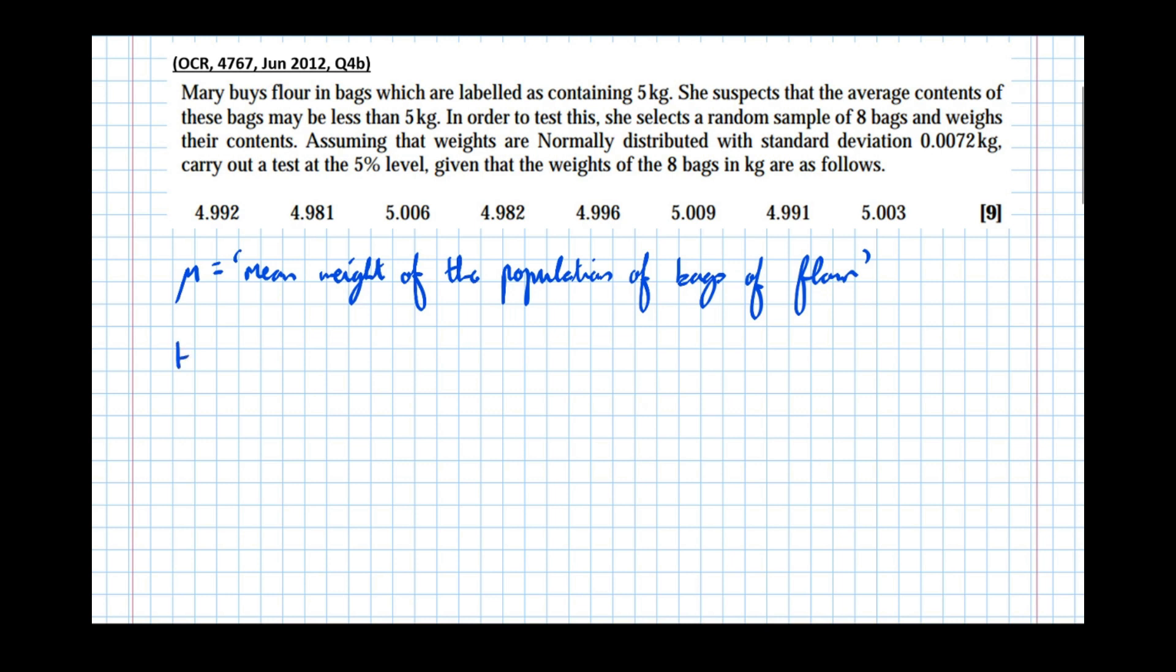So H₀, the null hypothesis, we'll say that the mean is 5. The alternate hypothesis: she suspects that the bags may be less than 5kg in weight on average, so μ is less than 5. And so far we've gained 3 marks for that. Now the number of marks you get may differ from exam board to exam board. However, the principle of having to write all this is still there. This is an ideal exam mark scheme perfect answer. So if you write this, you can't lose any marks.